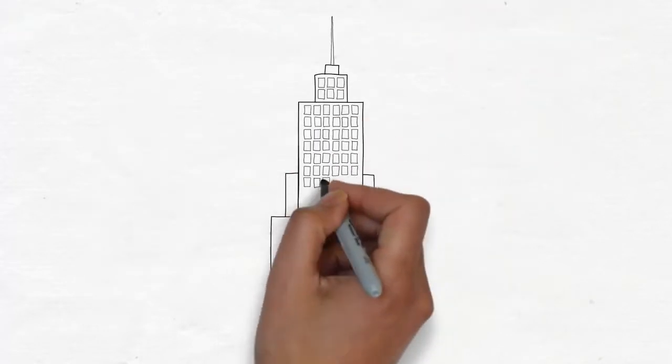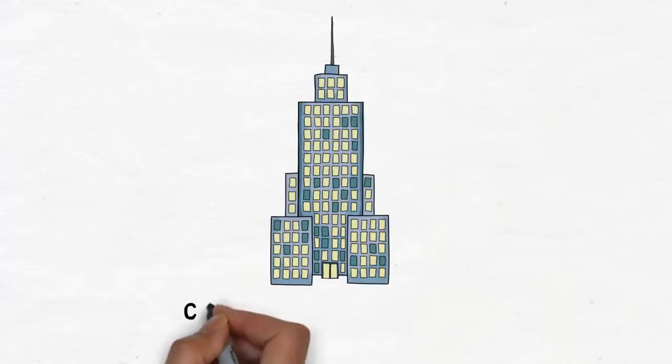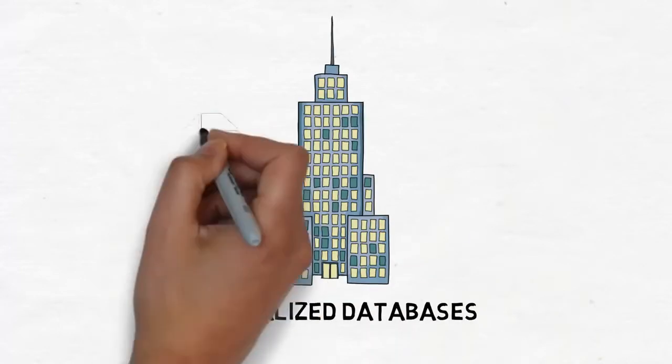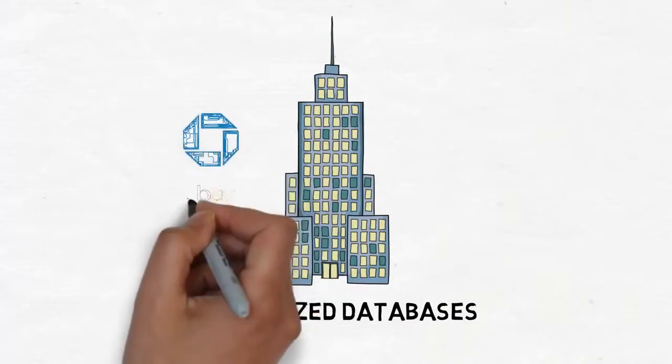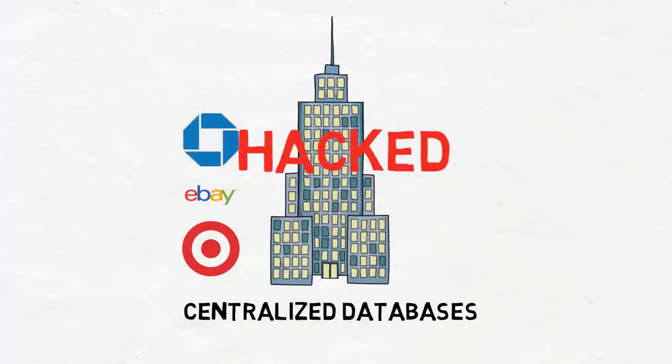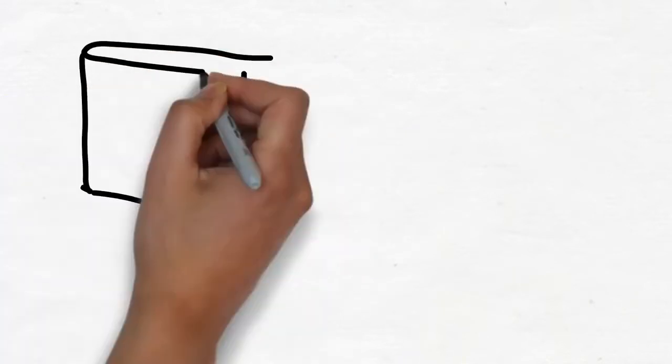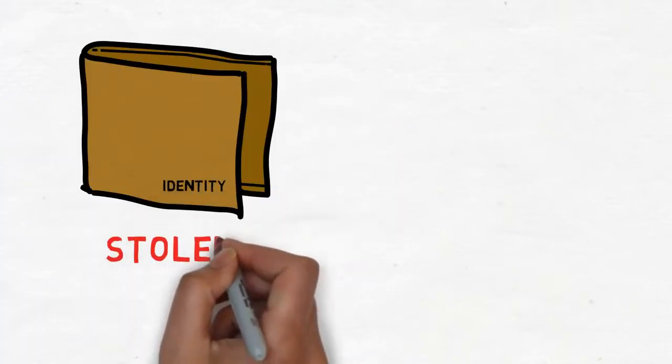Here's where we run into trouble. These are centralized databases owned by someone we have to trust. And as some major hacks like Chase, eBay, and Target have proven, they're not very safe. Imagine if someone stole your identity or changed the deed to your house.